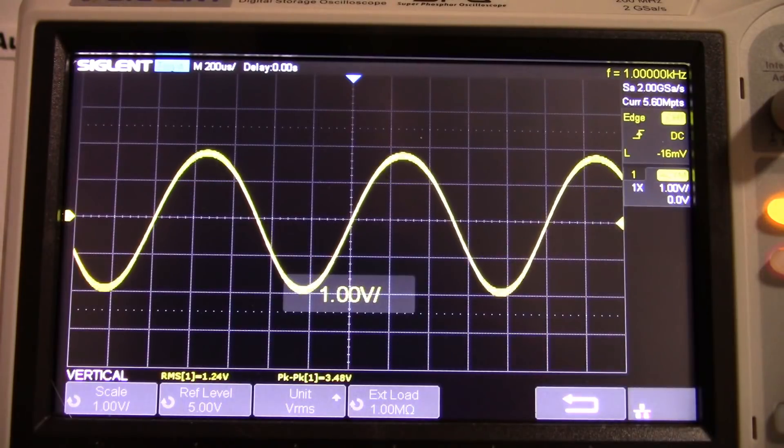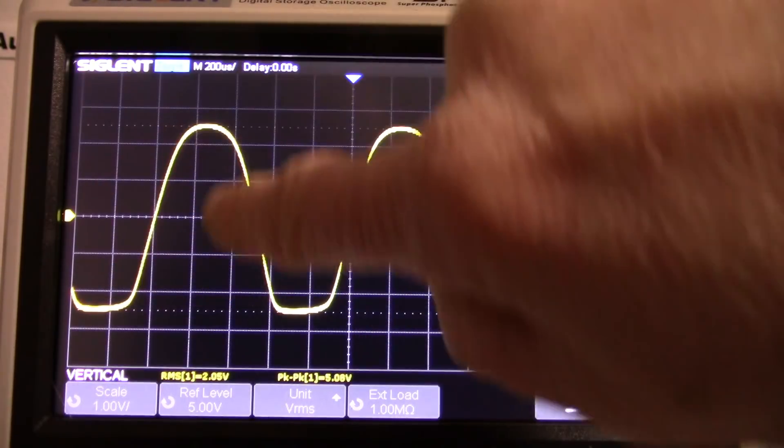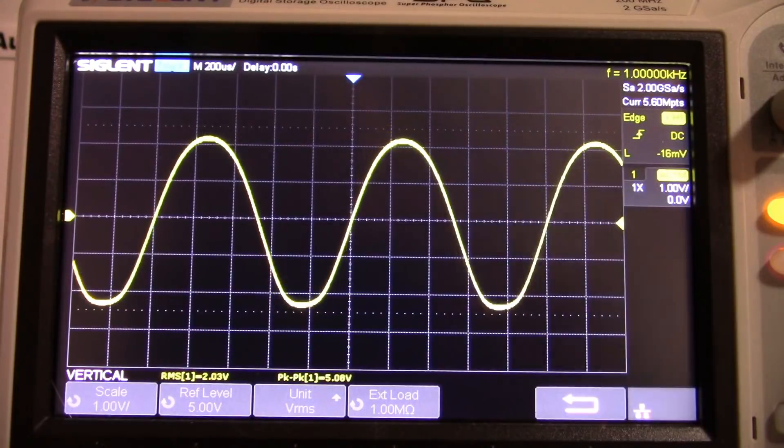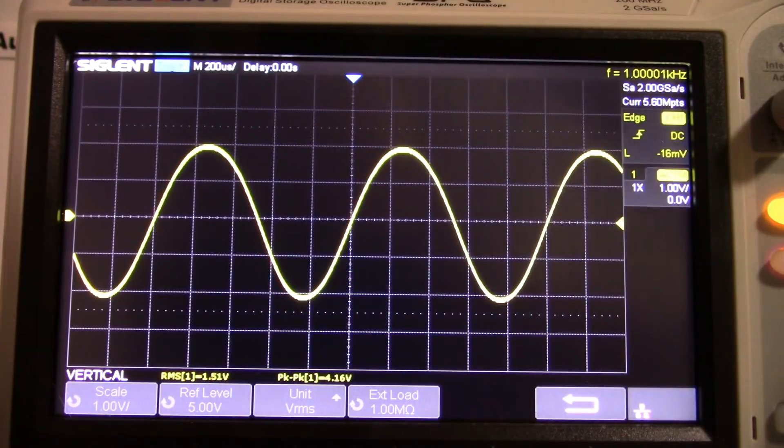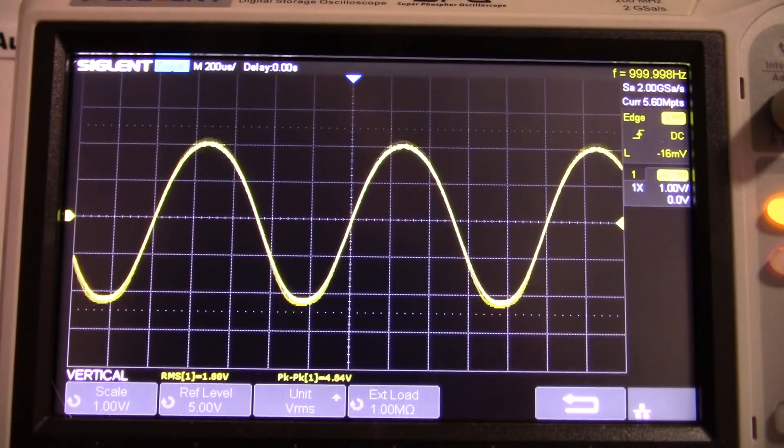But let's crank it up. And there's clipping. It'll have kind of like a soft clipping. It won't be as hard as an amplifier that has large quantities of open loop gain with negative feedback. So you can see here.